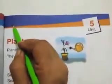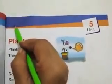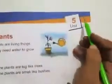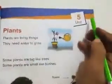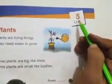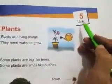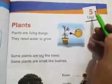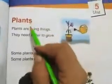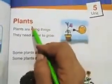First we have to write the date and day. This is Unit 5: Plants.